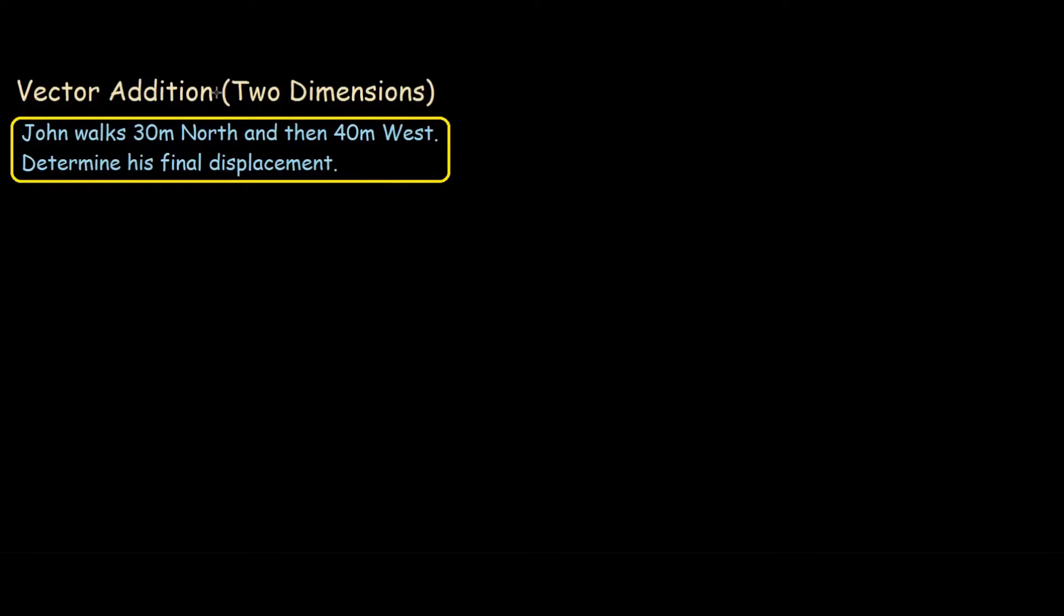Say we have this two-dimensional vector problem where John walks 30 meters north and then 40 meters west, and our question is to determine his final displacement. Remember, when we're talking about displacement in physics, we're talking about John's distance traveled from his initial position to his final position. We're not simply talking about the distance he traveled, because that would just be 30 meters plus 40 meters, which is 70 meters.